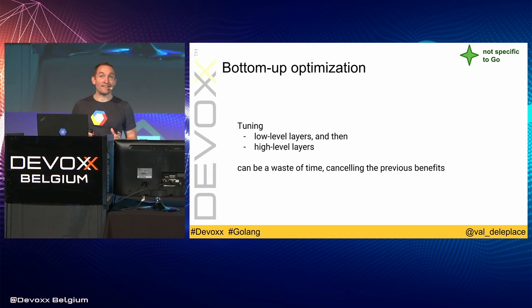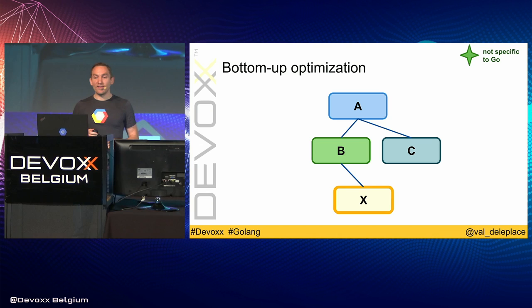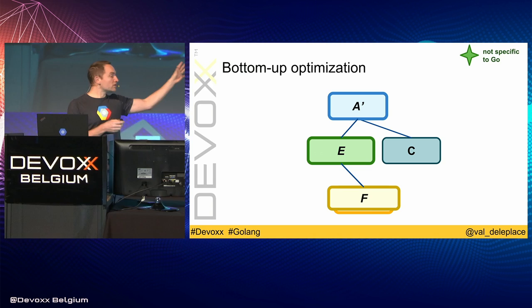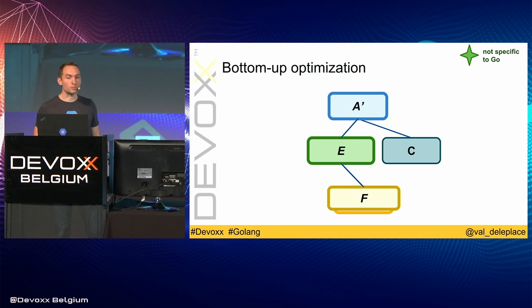Tuning low-level layers before high-level layers can be a waste of time, cancelling previous benefits. If for performance reasons I first replace the low-level component D with a very fast component X, and then later I replace algorithm A by A' with different sub-components, I just threw away my first refactoring — I spent time and effort replacing D with X and won't benefit from it at all. I generally don't recommend bottom-up optimization; I prefer top-down.